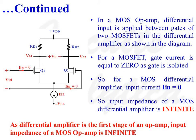For a MOSFET, gate current is equal to zero, as the gate is isolated from the body of the MOSFET. So for a MOS differential amplifier pair, input current Iin is equal to zero. Therefore, input impedance of a MOS differential amplifier is infinite. As the differential amplifier is the first stage of an op-amp, the input impedance of a MOS operational amplifier is equal to infinite.